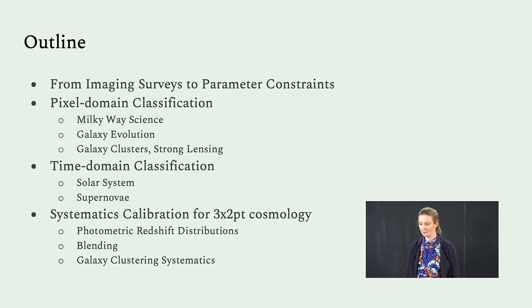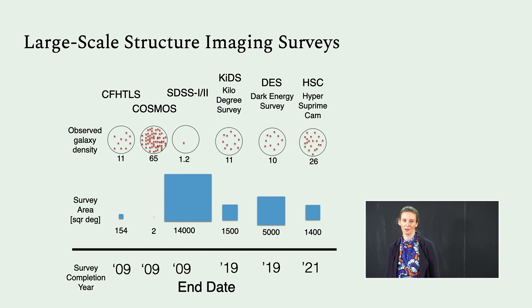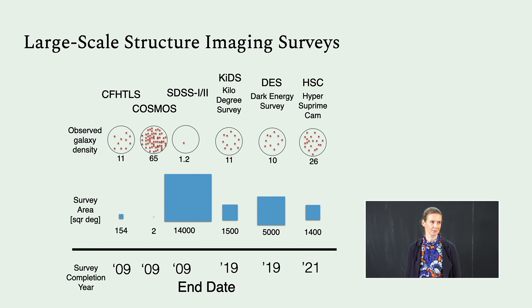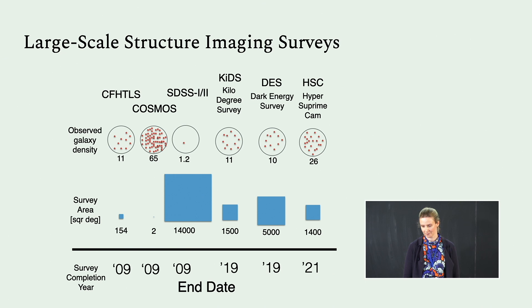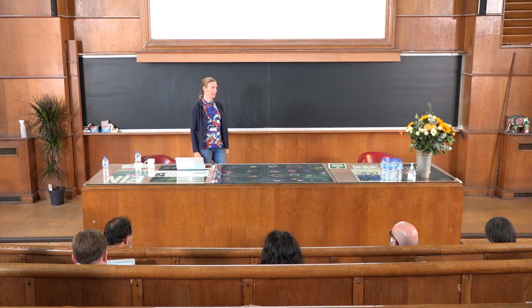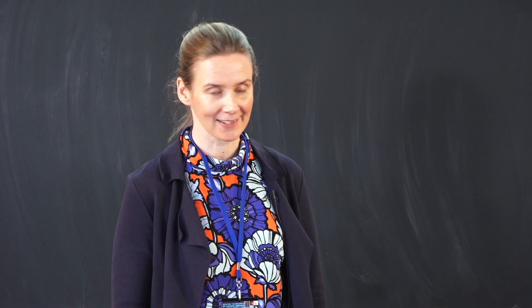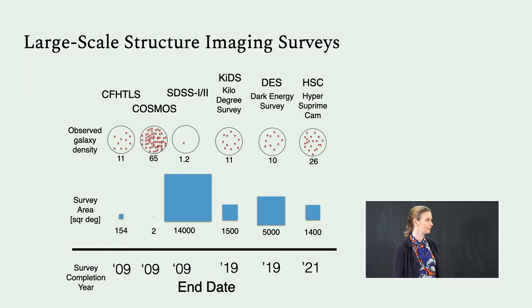Let me start off by putting imaging surveys into a recent context. I'm showing some recent surveys in terms of survey completion, ordered that way. The blue squares indicate the survey area on sky and the red dots show the survey depths in terms of the observed galaxy density that can make it into a lensing analysis. We have this generation of surveys ending around 2009 — CFHS, Cosmos, and the imaging part of SDSS — with very different survey strategies.